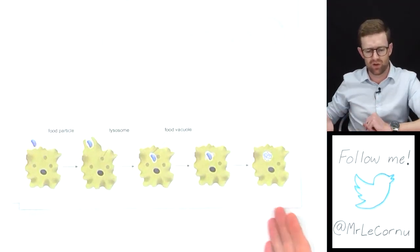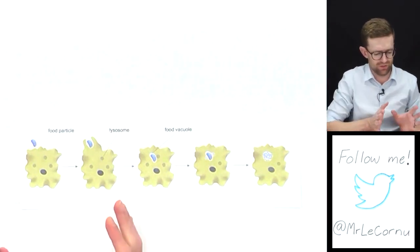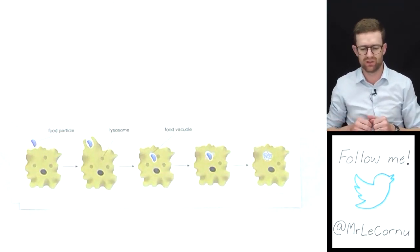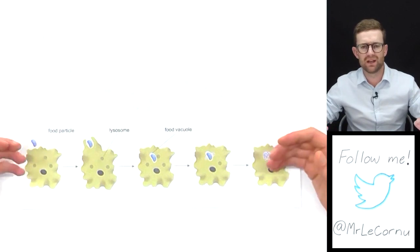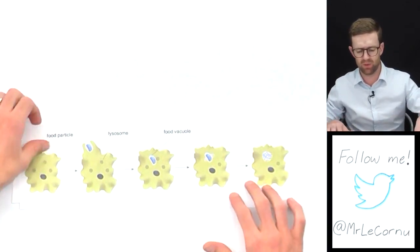I just had this diagram showing you what takes place in endocytosis, where the cell engulfs and encloses a particle and brings it inside. Sometimes you're going to be asked to be able to draw what happens, and you can do it in a simpler way than this.